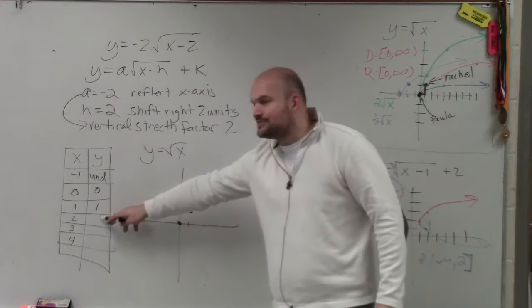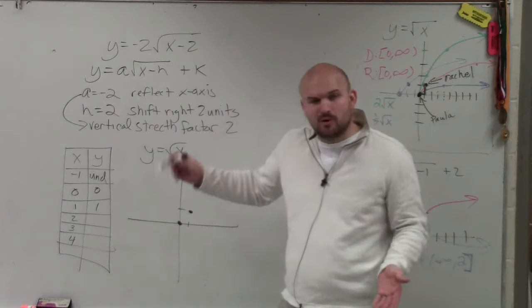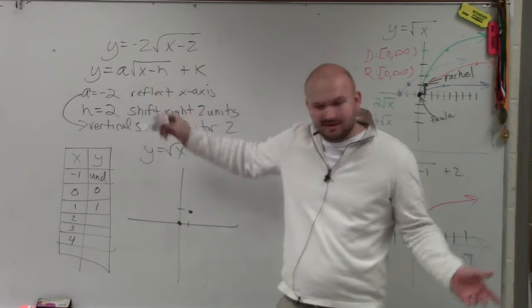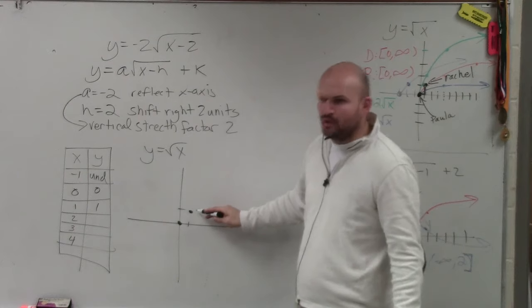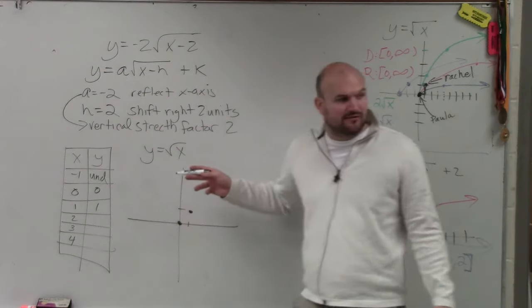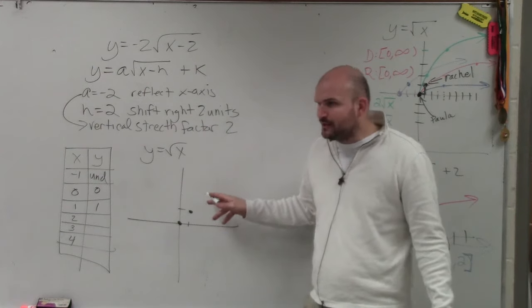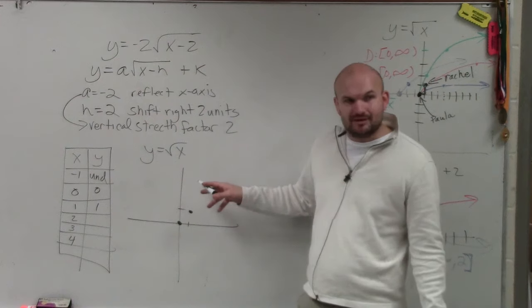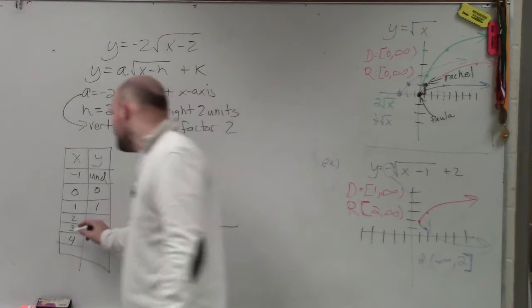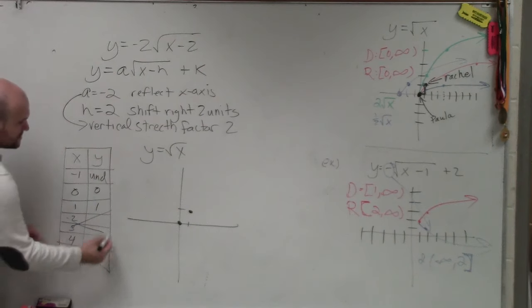Now, when I plug in 2, what's the square root of 2? If you guys plug it in your calculator, it's like 1.4, but it's dot, dot, dot, so you're approximating. So I really don't want to plug in this 1.2, or 1.4. If I plug in 3, the square root of 3 ends up being 1.7, dot, dot, dot, something, something. I really don't want to try to plug in or plot 1.7. However, if I go into 4, so I'm just not going to worry about those. If I plug in 4, what's the square root of 4? 2.